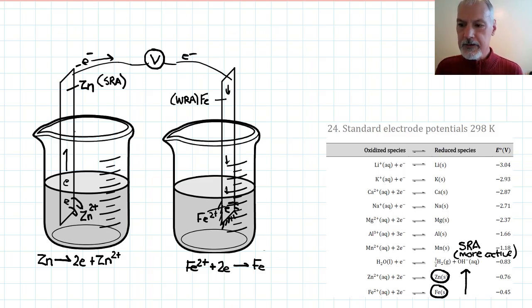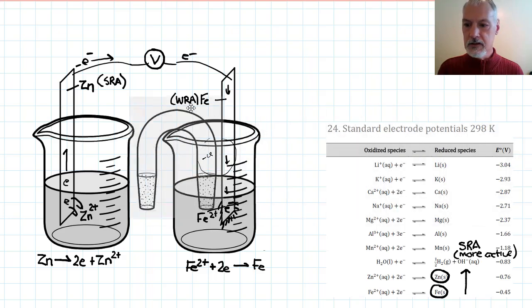So electrons are making their way up here as zinc atoms change into ions and hop into the solution. Now, this process wouldn't last too long for the following reasons. As electrons make their way over to this beaker, this beaker would develop a negative charge unless I somehow balanced the situation. And that brings us to the purpose or the use of something called a salt bridge,